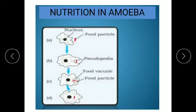This slide shows nutrition in amoeba. When amoeba senses food, the endoplasm is pushed towards the cell membrane. The body extends and forms a food vacuole. The cytoplasm secretes digestive juices which digest the engulfed food particle.